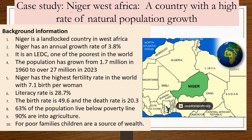Our case study for high population growth is Niger, located in West Africa. Niger is a landlocked country — it has no access to the sea and is surrounded by other countries. Niger has an annual growth rate of around 3.8%. It is an LEDC and one of the poorest countries in the world. Its population has grown from 1.7 million in 1960 to over 27 million in 2023.